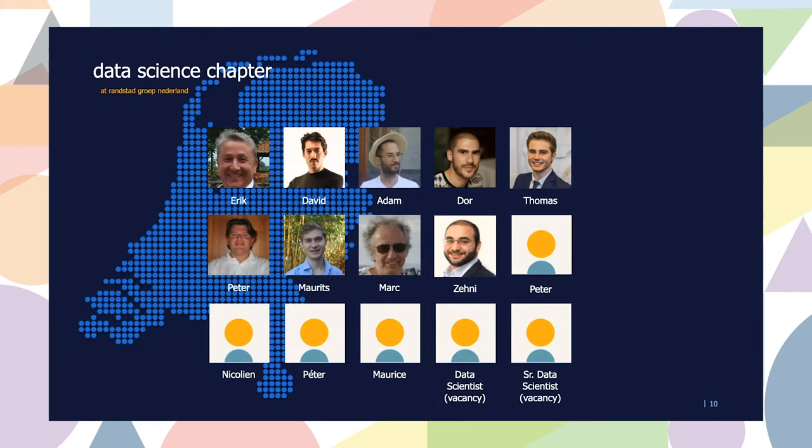These are the data scientists we have employed at Randstad Nederland. It's important to note that all of our data scientists are embedded in different teams across the organization — at IT, marketing, finance — which means there is quite open communication across teams. One thing that's hard to ignore in this context is that we have more data scientists called Peter than we have women. This is something we're quite aware of and trying to address, though in terms of age and nationalities we do quite well on diversity.